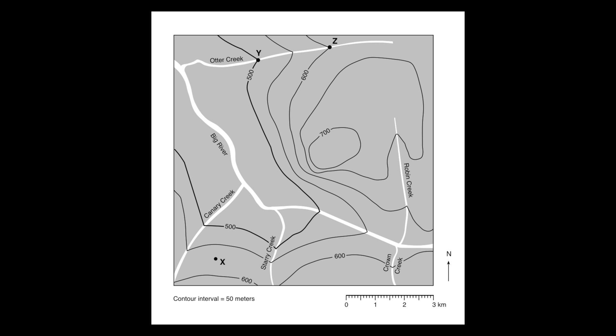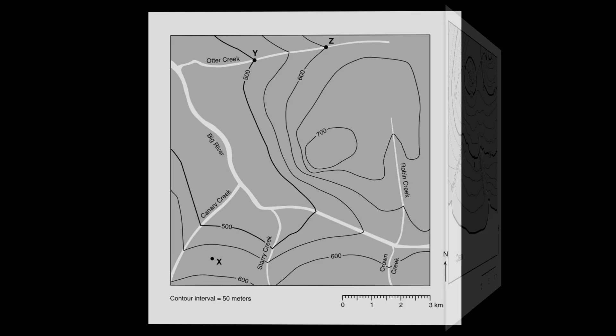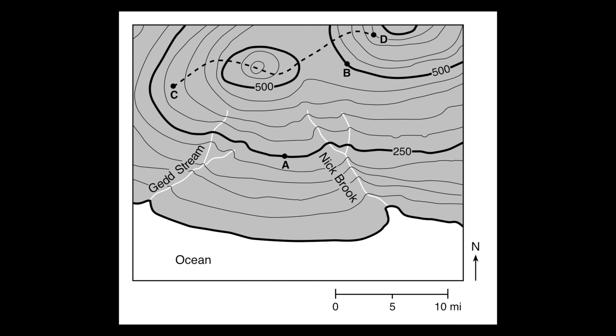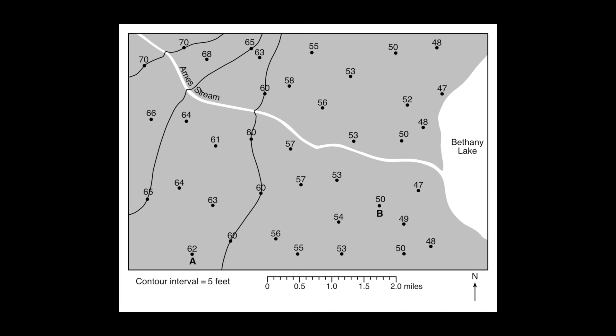If you're good to go, we're going to continue our look today by learning how to actually create all of these contour lines as we build our topographic map. In order to do that, we have to go back to some raw data, like I see on this right here. So this is what's called a field — a field or field map is a map of an area that shows some data.